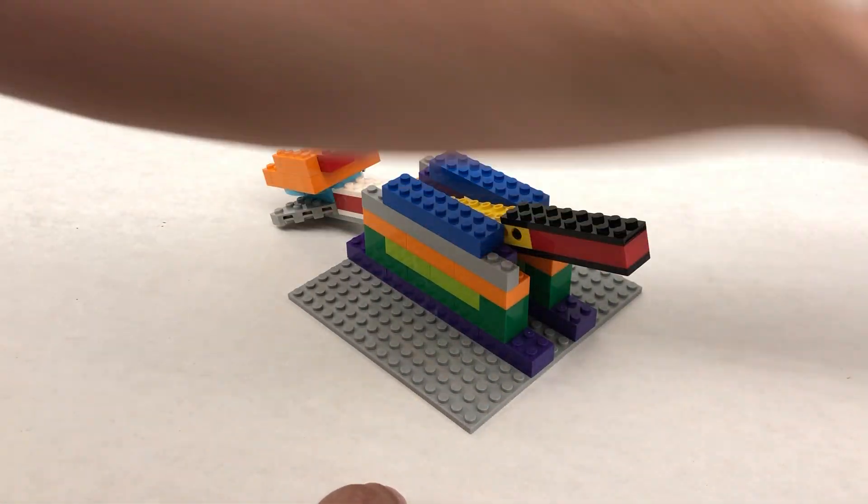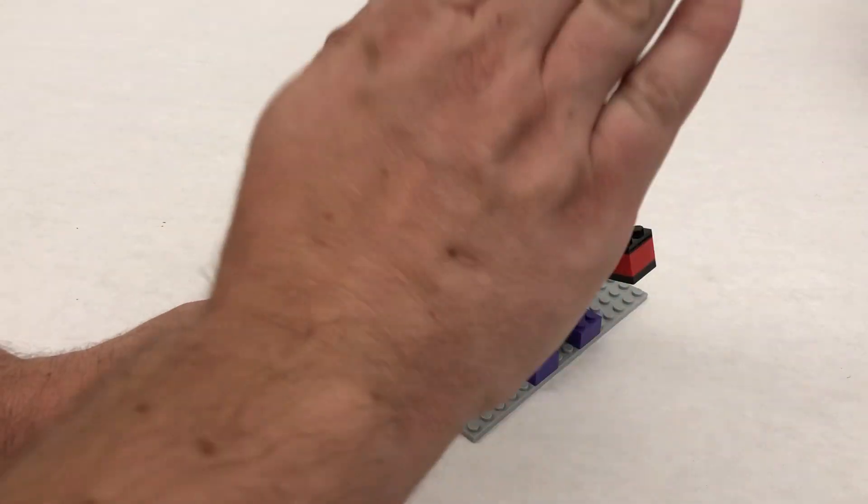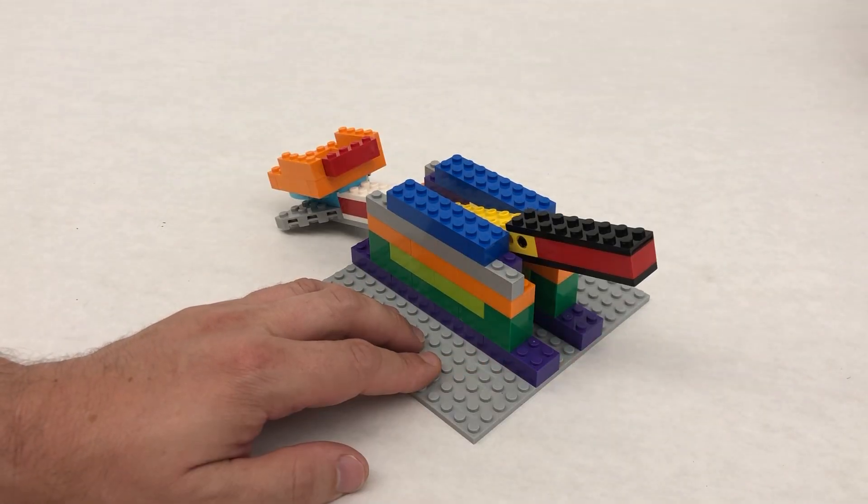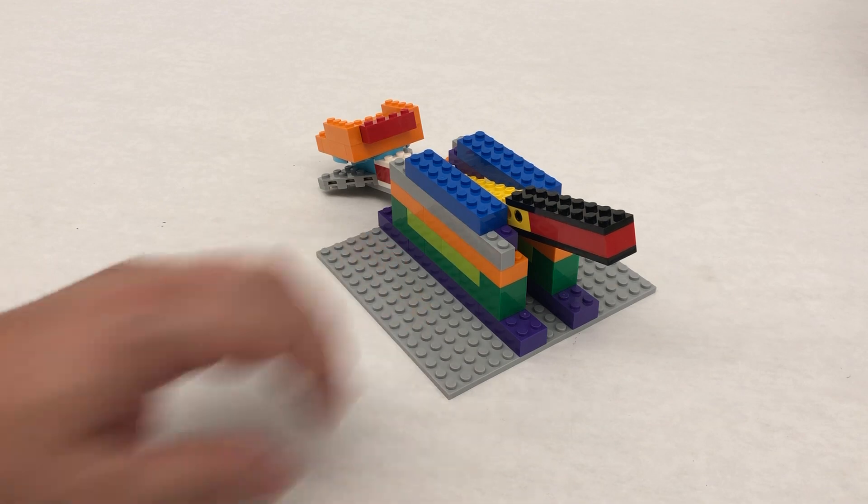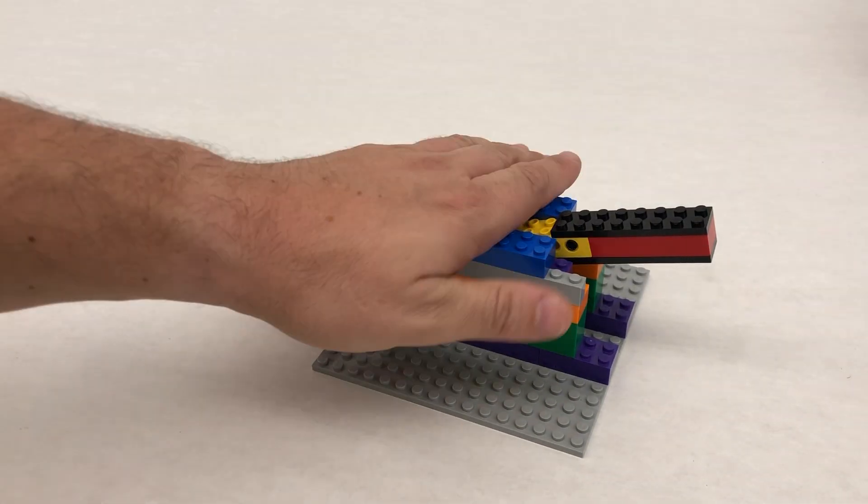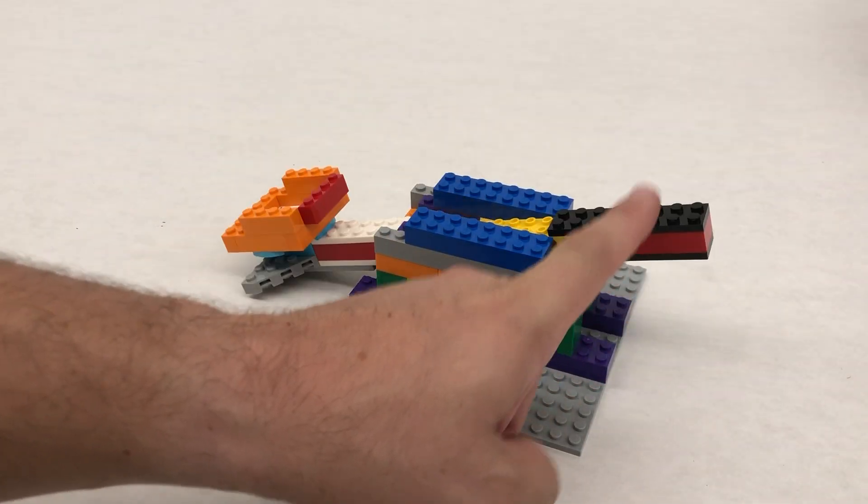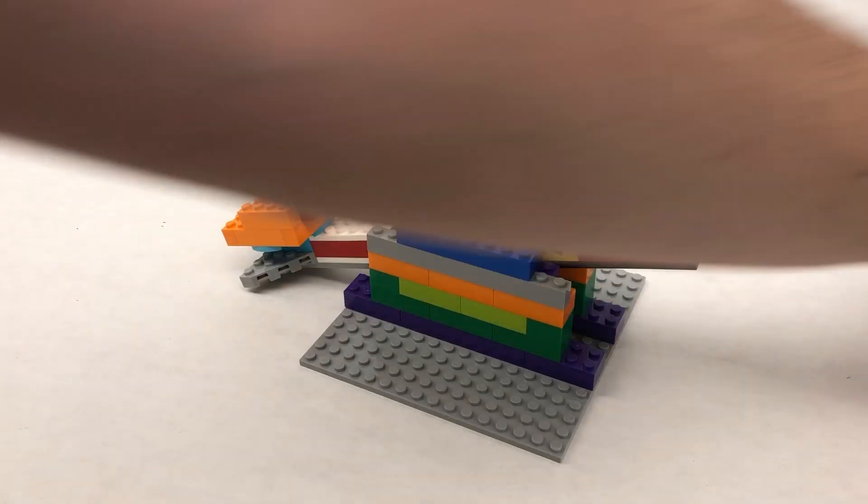You just press down in order to launch something. Let's just put in a LEGO brick. We'll put it inside and out it flew. All right, I hope you were successful in completing this build and having fun with our little LEGO catapult launcher.